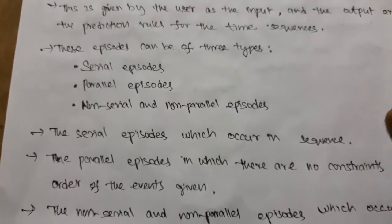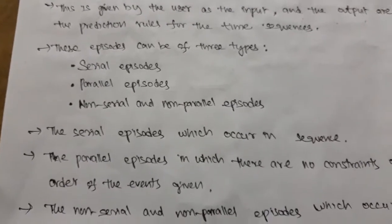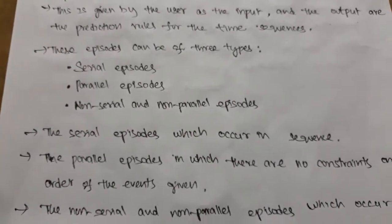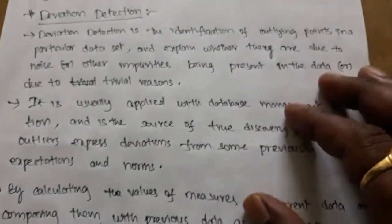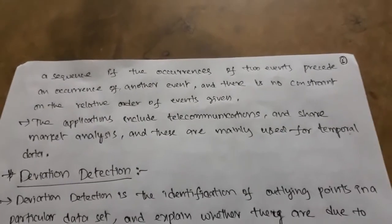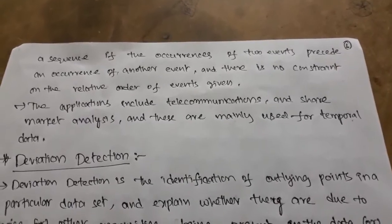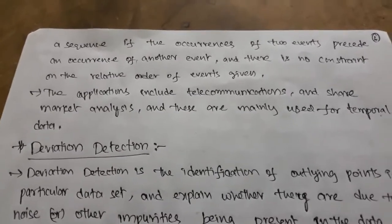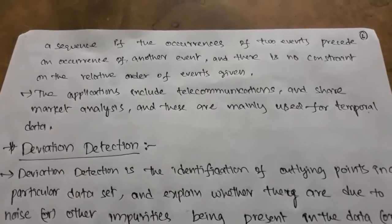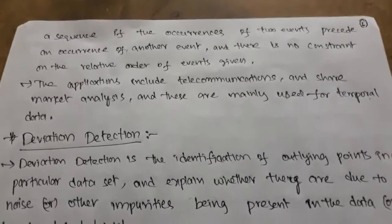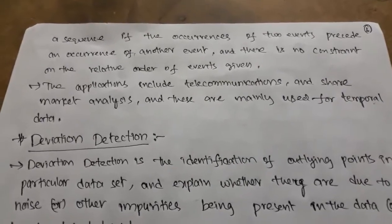If the data is in disorder — no serial and no parallel — the type of situations covered are non-serial and non-parallel episodes, which occur in a sequence where the occurrence of events precedes another event, with no constraint on the relative order of the events. These applications include the telecommunication area and share market analysis, and these frequent episodes are mainly used for temporal data.